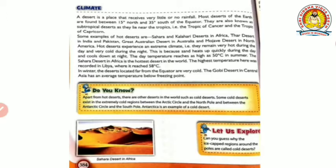The day temperature reaches as high as 50 degrees Celsius in summer. The Sahara desert in Africa is the hottest desert in the world. The highest temperature here was recorded in Libya where it reached 58 degrees Celsius. So generally the temperature reaches 50 degrees Celsius, but the world record was measured in Libya at 58 degrees Celsius. Deserts located far from the equator are very cold. The Gobi desert in central Asia has an average temperature below freezing point - that means below zero degrees Celsius, in the negative.